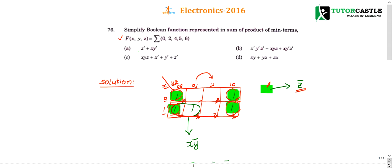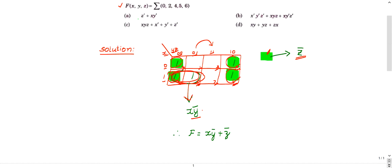And this 2, this one is left out. So I am making the group of these 2 ones and for this I am going to get x, y bar. So this is a SOP form. So this product and this if I am going to add, I am going to get x, y bar plus z bar.